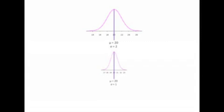Some folks in statistics will tell you there are only two relevant primary statistics in all of statistical research: the mean and the standard deviation. Others say it's the mean and the variance. Since standard deviation is the square root of the variance, these terms mean and imply the same thing — both speak about the scatter of the data.